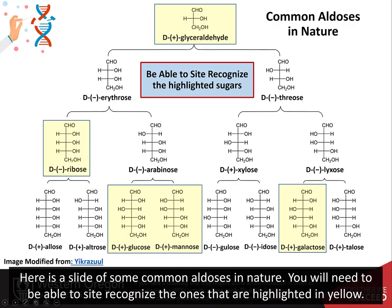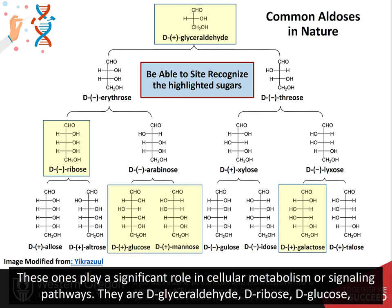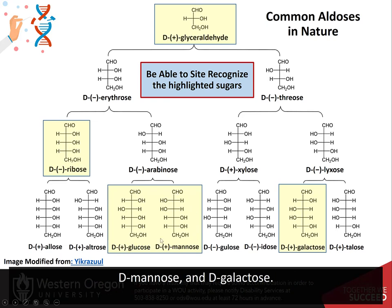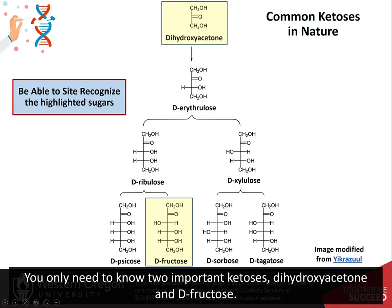Here is a slide of some common aldoses in nature. You will need to be able to sight-recognize the ones highlighted in yellow, as these play a significant role in cellular metabolism or signaling pathways. They are D-glyceraldehyde, D-ribose, D-glucose, D-mannose, and D-galactose. You only need to know two important ketoses: dihydroxyacetone and D-fructose.